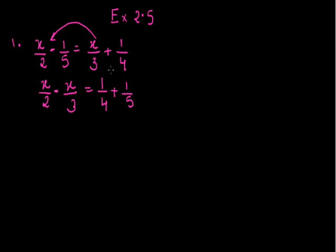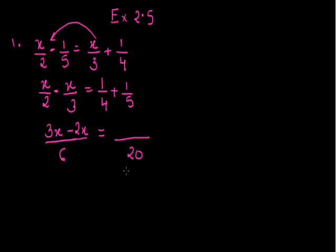Variables are shifted to one side and constants to the other side. Now I can solve the left hand side by taking the LCM. The LCM of 2 and 3 is 6, so 3x minus 2x upon 6. I can solve the right hand side: 1 upon 4 plus 1 upon 5. Taking the LCM of 4 and 5, which is 20, we get 5 plus 4. So 3x minus 2x, that is x upon 6, is equal to 5 plus 4, that is 9 upon 20.